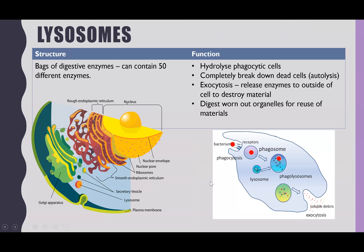Next, lysosomes. They are a relatively small organelle — vesicles or bags of digestive enzymes, potentially containing as many as 50 different enzymes in one lysosome. You're probably most familiar with them in phagocytosis in the immunity topic. Some lysosomes contain the enzyme lysozyme, which digests pathogens inside phagocytes. They can also break down dead cells within an organism — known as autolysis — and then release useful materials that can be recycled.